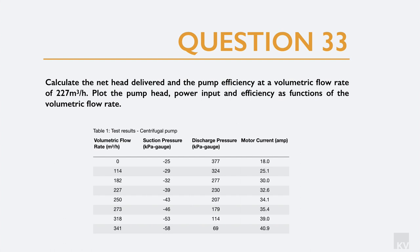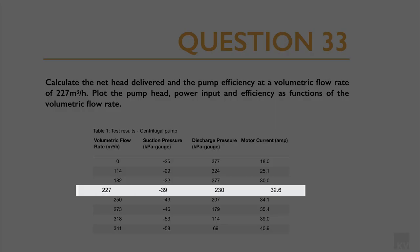We are asked to calculate the net delivered head and the pump efficiency at a volumetric flow rate of 227 meters cubed per second. We are also asked to plot the pump head, the power input, and the efficiencies as functions of volumetric flow rate. The relevant row gives us the volumetric flow rate, suction pressure, delivery pressure, and motor amps — these are the values we need for this problem.